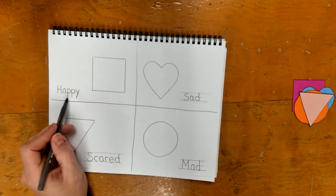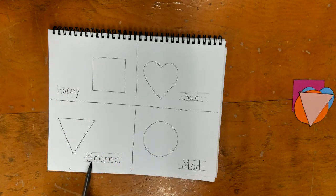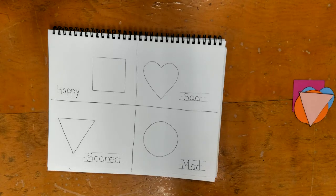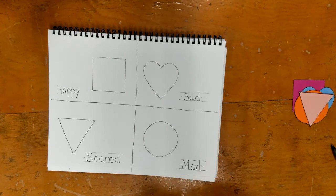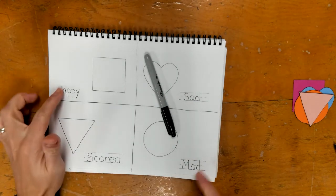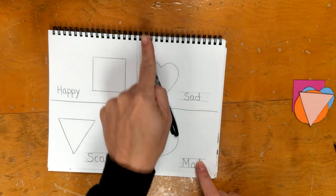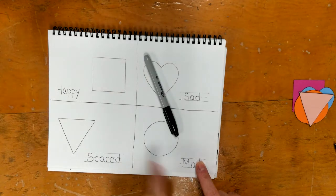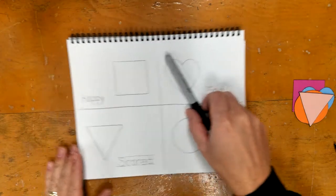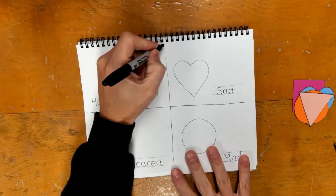So over here, I have happy. I have sad. I'm scared. And I have mad. The last thing I want you to do for today is get a black marker. And I want you to go over your words and I want you to go over your shapes and these middle lines that are separating the sections. So I'm going to do that. And you can do that if you are ready for that step.